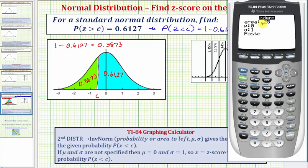It's first asking for the area, or the probability, which must be to the left of the value of c or the z-score we're looking for. In this case, we'd enter 0.3873 and press enter.